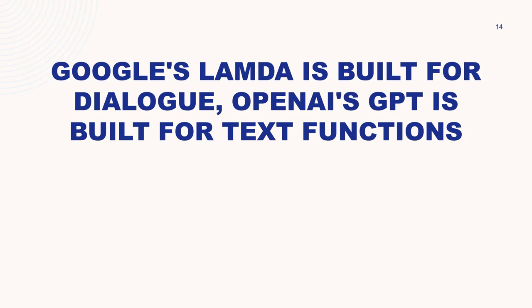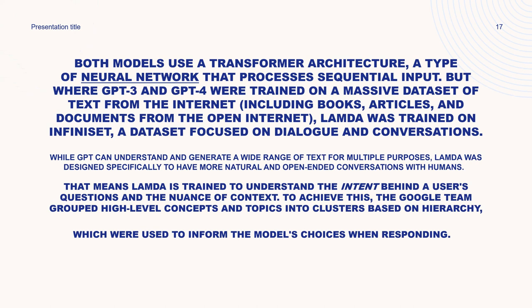There is a key difference though that boils down to the data sources and models they have been trained on. Google Bard uses Google's Language Model for Dialogue Applications, LaMDA, and can offer responses based on real-time current research pulled from the internet. ChatGPT, on the other hand, uses GPT-3 or GPT-4 depending on what version you are using, which is trained on data prior to late 2021.